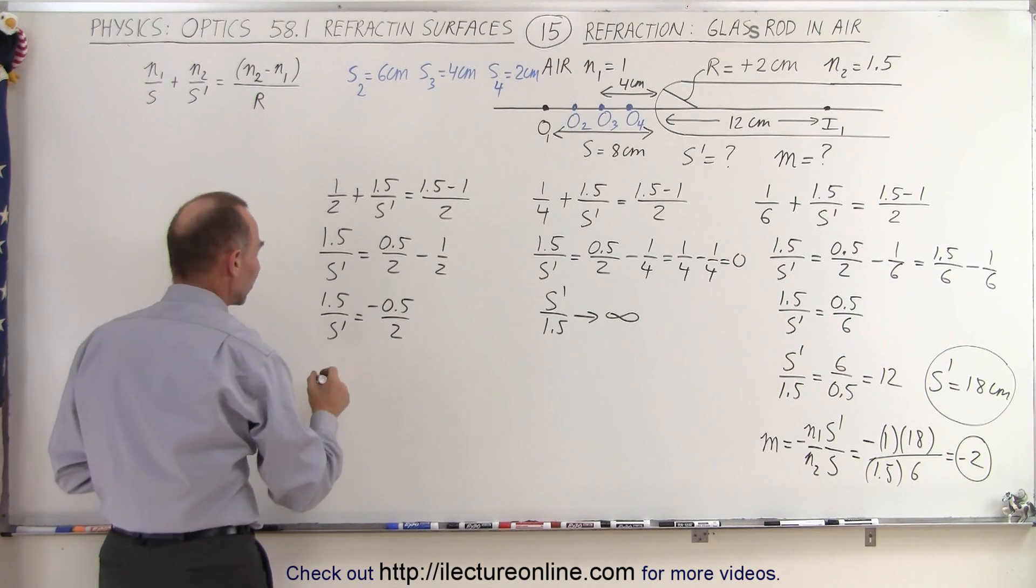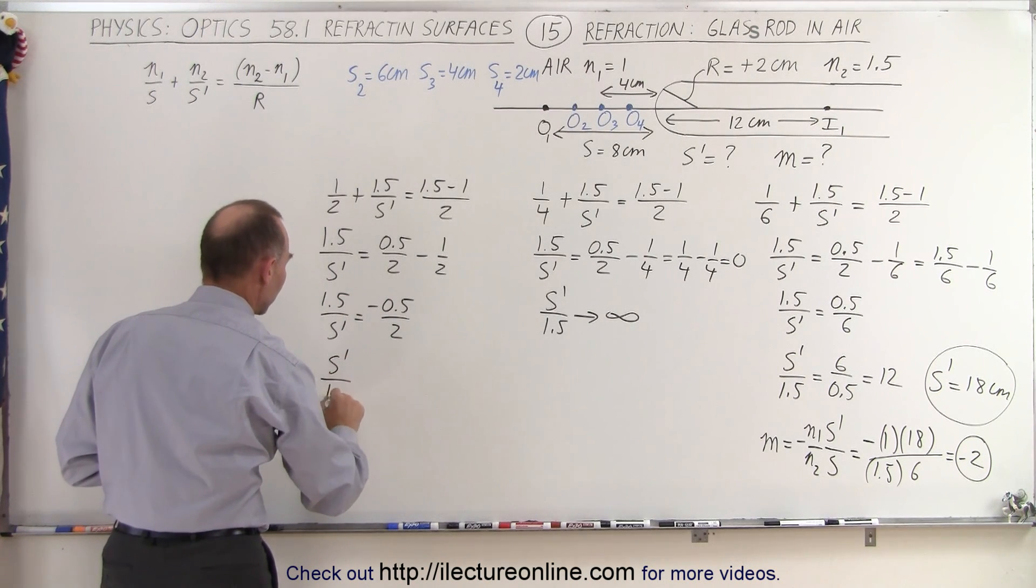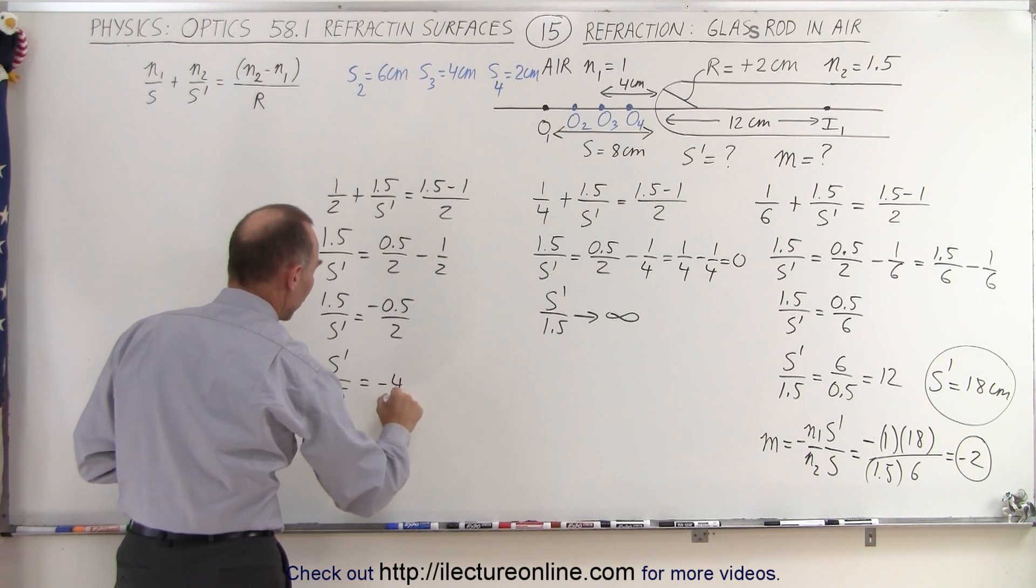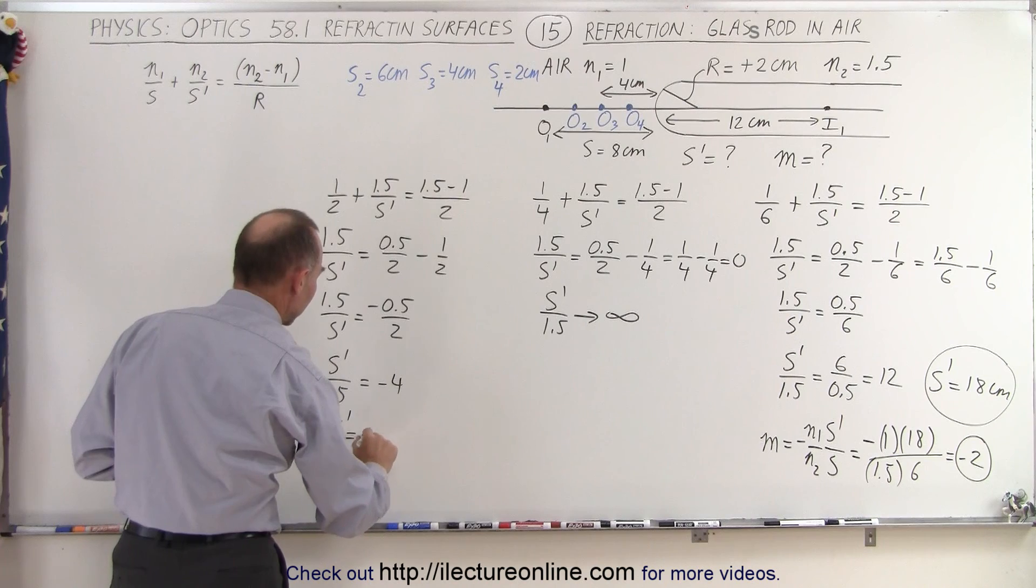Notice we now seem to get a negative answer. So s prime over 1.5 is equal to a negative 2 over 0.5, which is a negative 4, or s prime is equal to a negative 6.